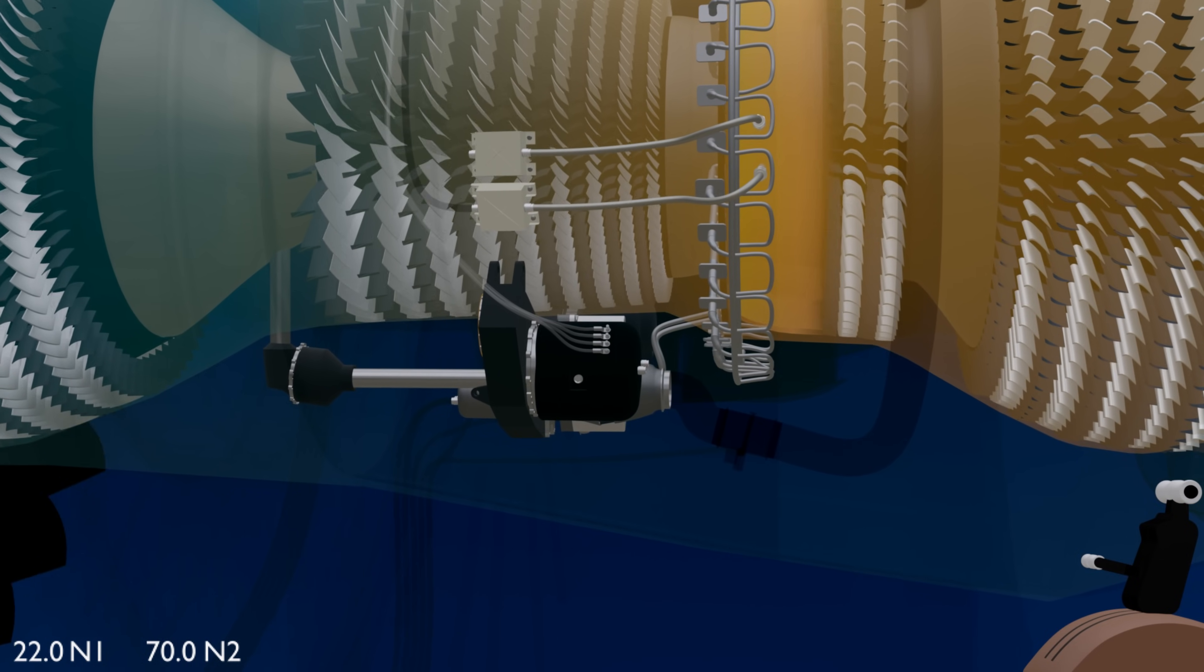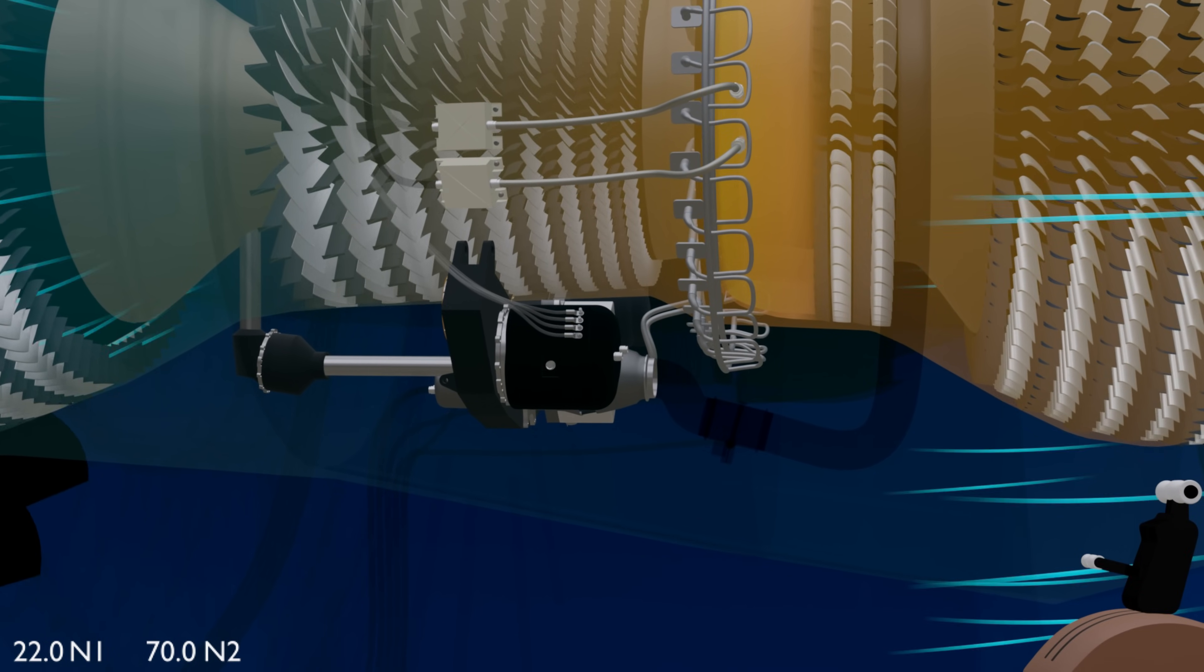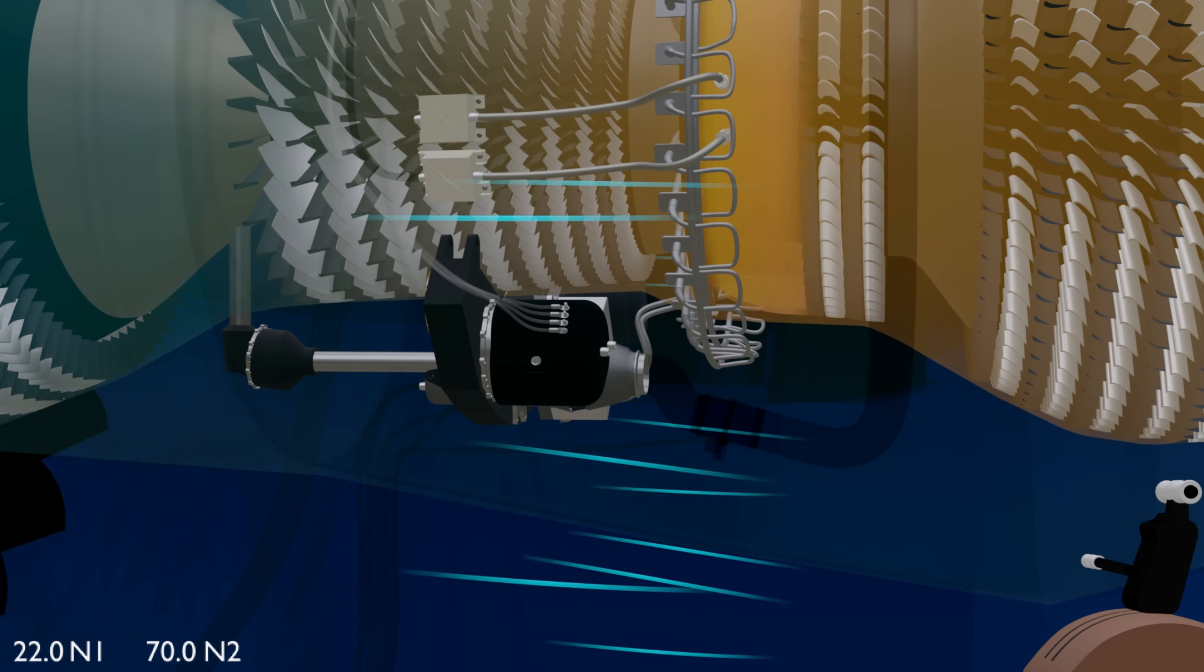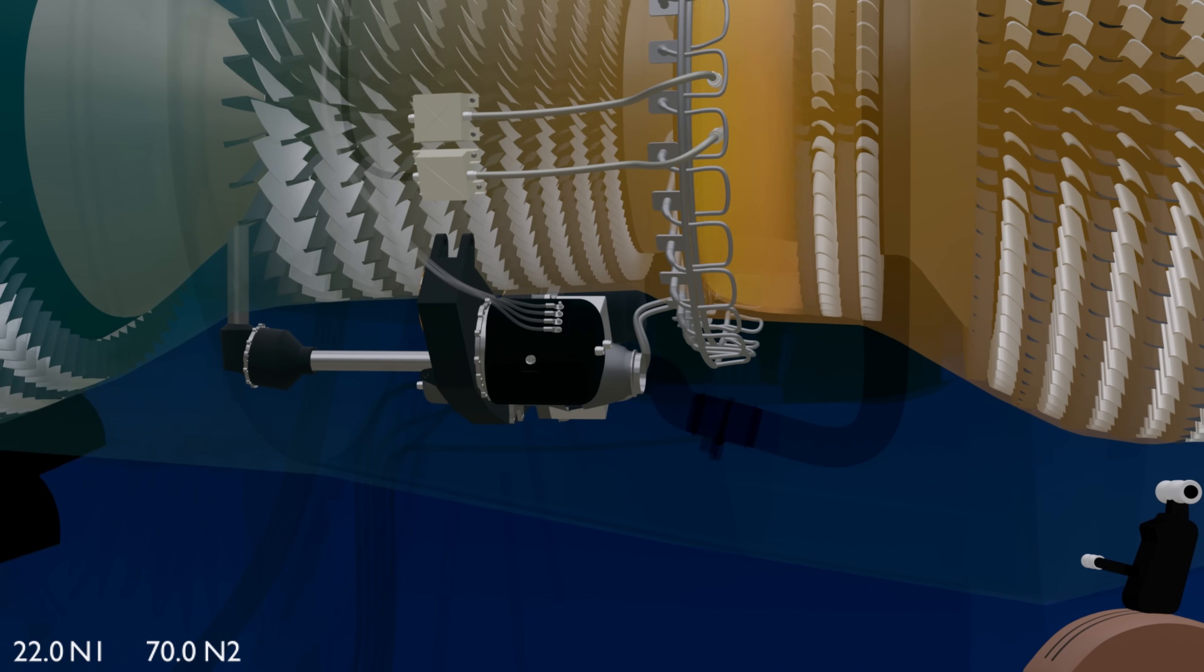This is not an ideal situation for the generator, as the change in N2 RPM will constantly change the generator output frequency. Variable frequency supply can damage the electrical components. Therefore, the IDG is a combination of a constant speed drive and an AC generator.